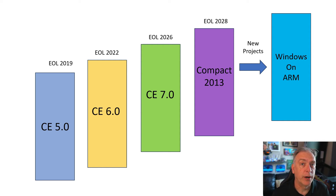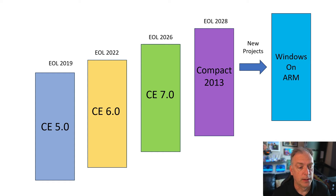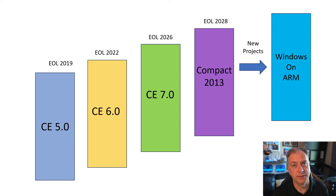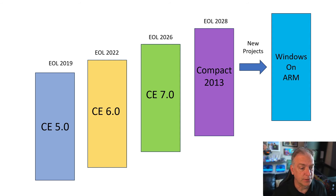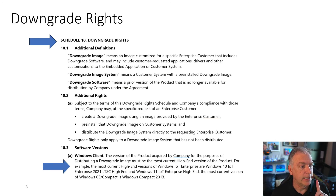If you're starting a brand new project similar to these old CE products, you'll want to look at the Windows on ARM family, since it's in a similar price range and runs on ARM processors. Reach out to us — we have other videos on Windows on ARM. That option is only for new projects. For old projects where you want to keep them going, the answer is downgrade rights.